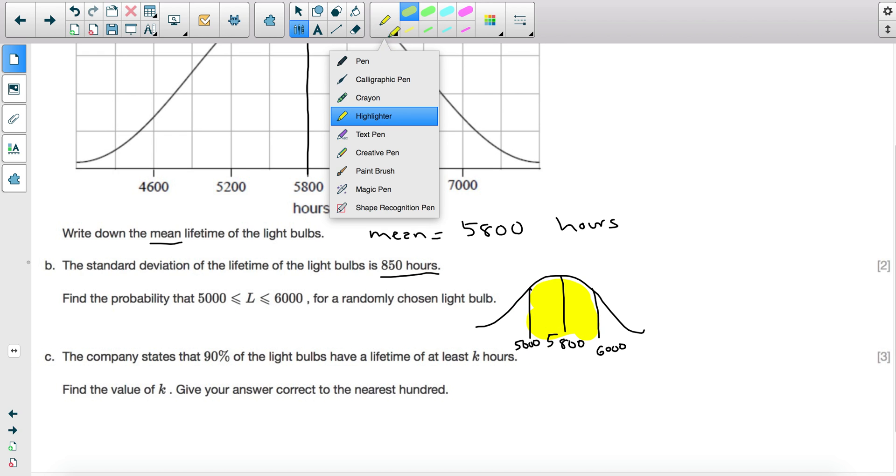Now, if you notice, since we have the standard deviation of 850, if I add or subtract 850 from the mean, I won't be able to get to 5,000 or 6,000, which means that we cannot use the typical percentages that we have. And so in this case, you'll have to use your GDC calculator.